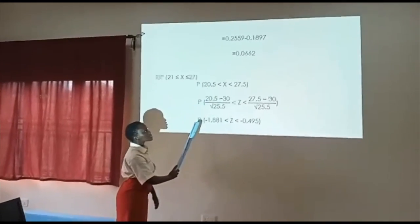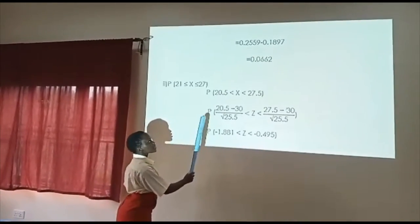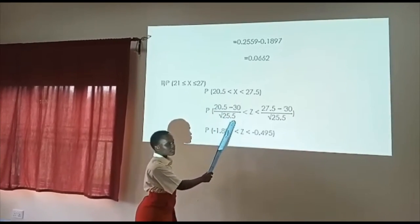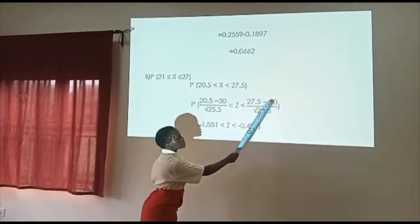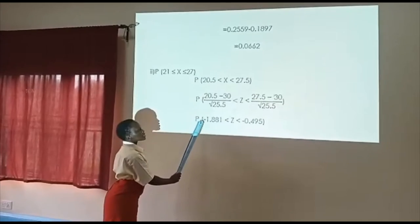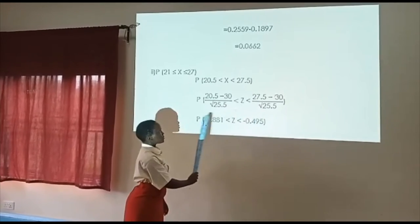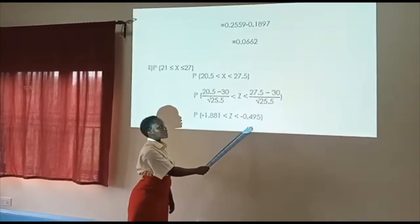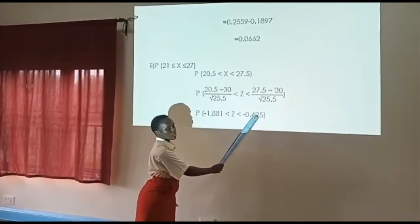After making it continuous, I will have to standardize it so I can represent it on the normal distribution curve. As I standardize, I get 20.5 minus our mean which was 30 divided by standard deviation which is root of 25.5, less than Z, less than 27.5 minus 30 divided by the root of 25.5. When I work this out, I get negative 1.881 on this side and negative 0.495 on this side. In other words, I am finding the probability between negative 1.881 and negative 0.495.